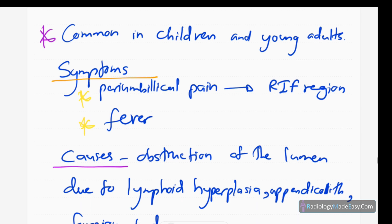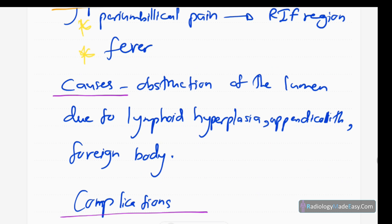Common symptoms include periumbilical pain initially — it's actually a referred pain — then localized pain in the right iliac fossa (RIF) region where the appendix is located. Other symptoms are fever and sometimes vomiting, and non-specific symptoms like loose motions. The causes are obstruction of the lumen, venous congestion of the appendix, and inflammation.